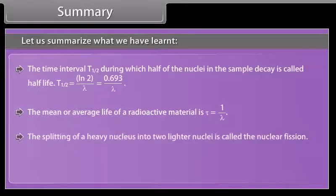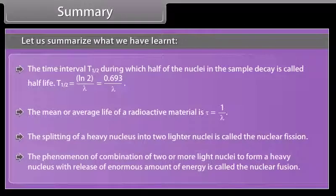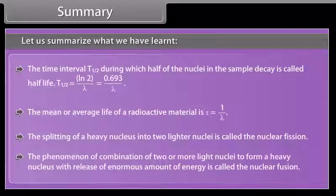The splitting of a heavy nucleus into two lighter nuclei is called the nuclear fission. The phenomenon of combination of two or more light nuclei to form a heavy nucleus with release of enormous amount of energy is called the nuclear fusion.